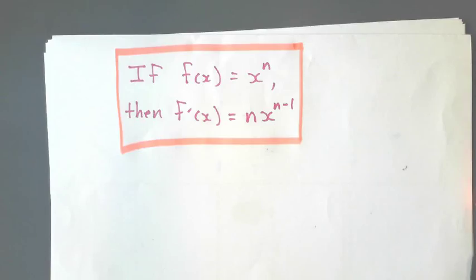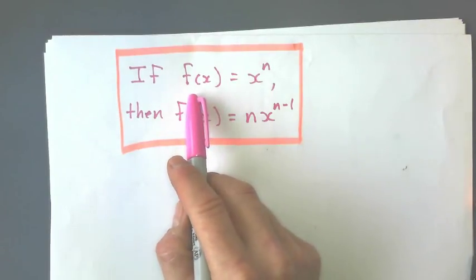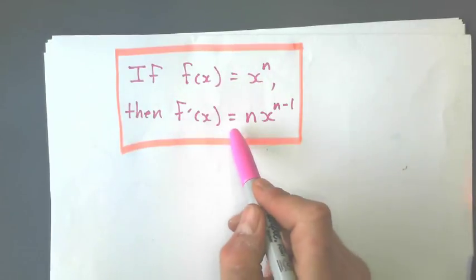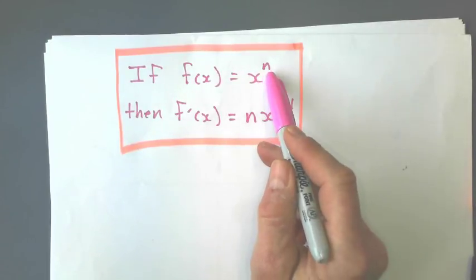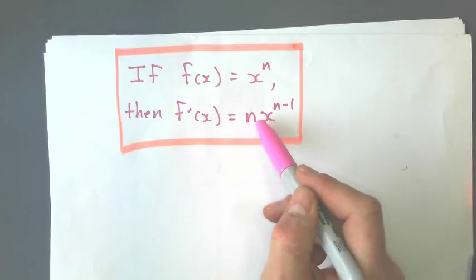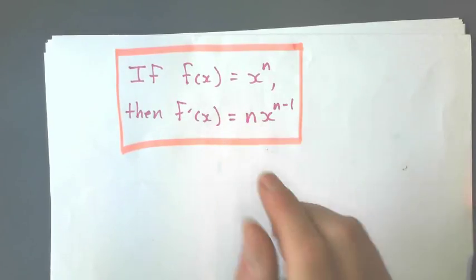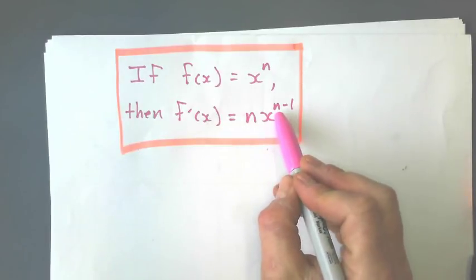All right, so first up, if I have a function and say it has some exponent, to differentiate it, what I do is I take that exponent and put it in front of the variable. This example has no coefficient, and then my new exponent is just one less.